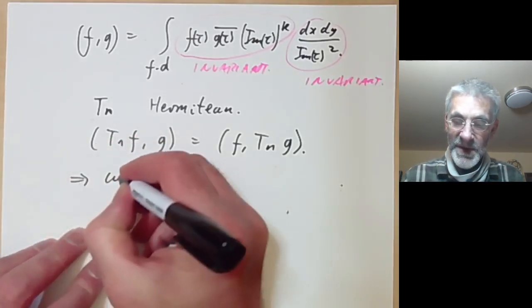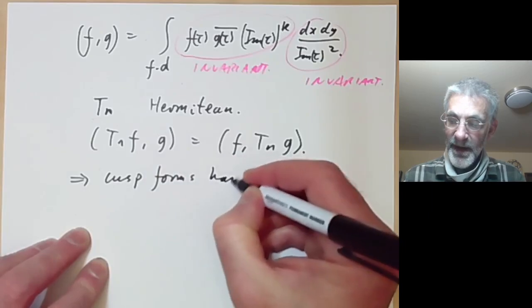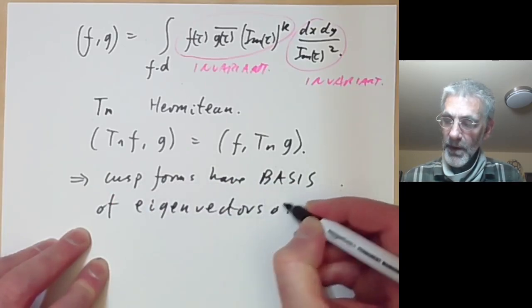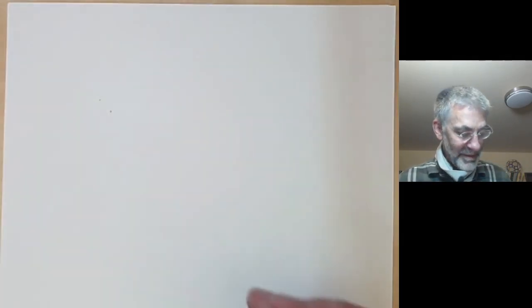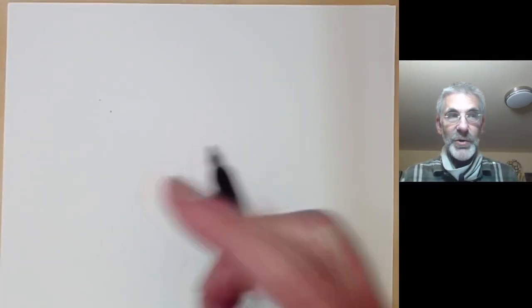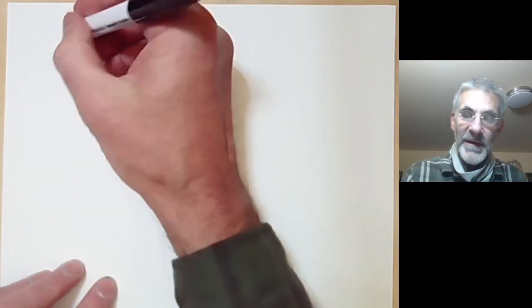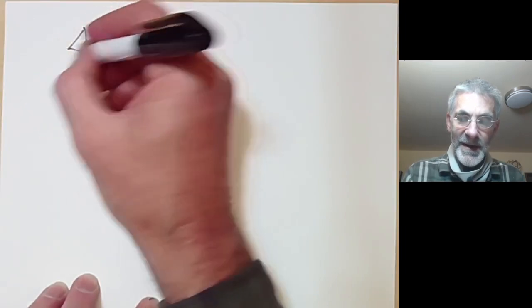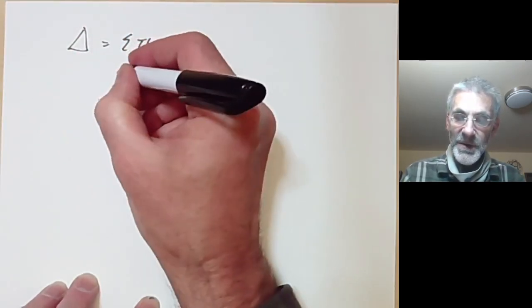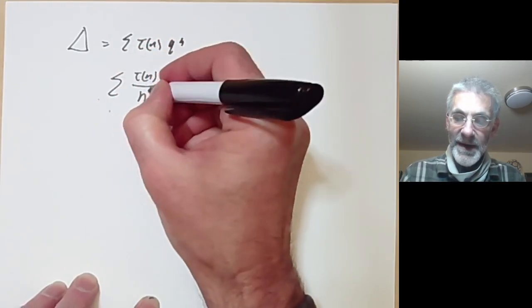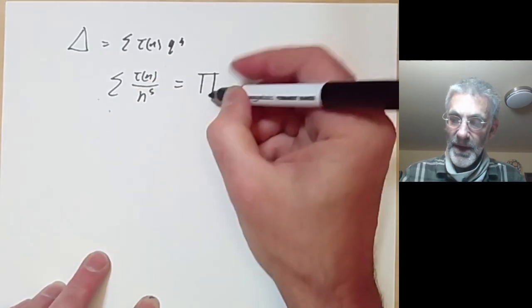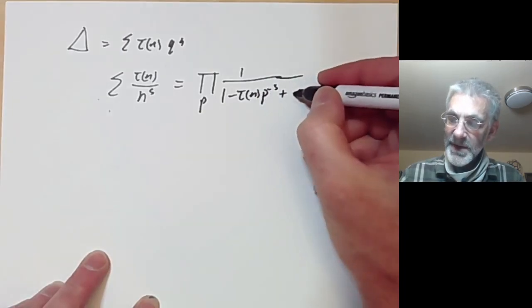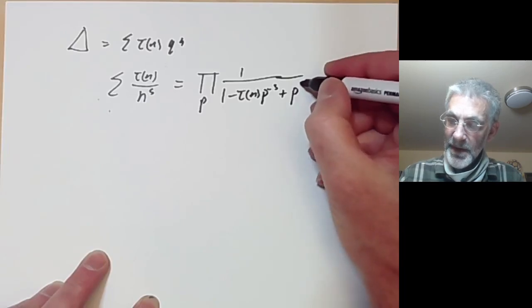This implies that the cusp forms have a basis of eigenvectors of the operators T_n. As an application, everything that holds for the discriminant function Δ has an analog for all eigenforms. For example, Δ = Σ τ(n) q^n and we saw that Σ τ(n)/n^s can be written as an Euler product: the product over primes p of 1/(1 − τ(p) p^{-s} + p^{11−2s}).